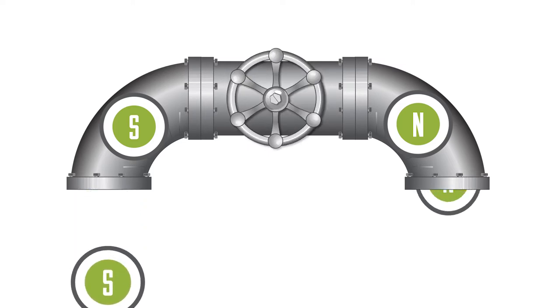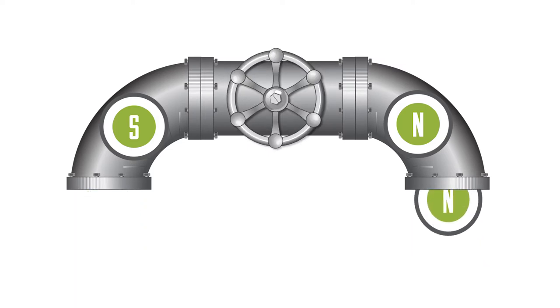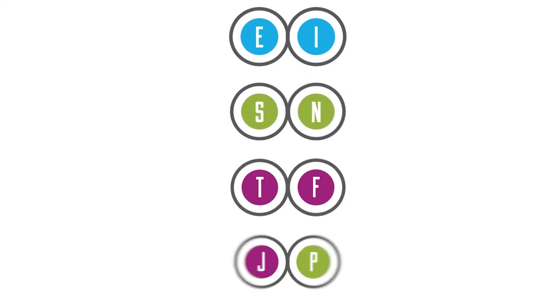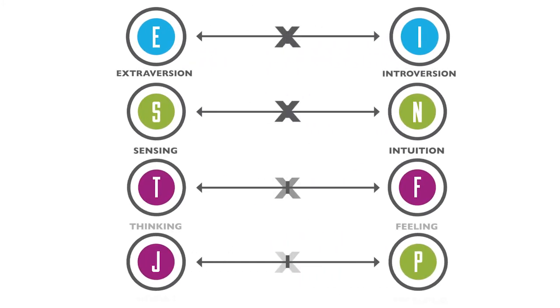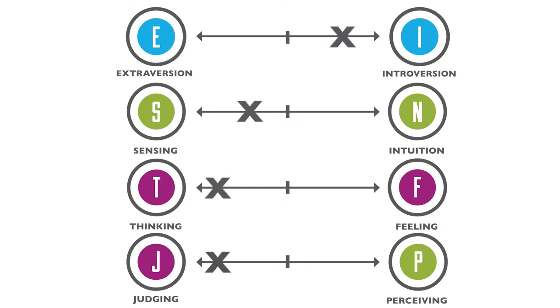You'll learn more about each of the four scales and you'll be asked to differentiate. You may prefer to think of yourself as down the middle, believing you're striking a balance, showing you use both. Yes, everyone uses both. The goal is to know which preference is more automatic, unconscious, and natural — like signing your name with your preferred hand — and which preference is more conscious and takes more time and energy, like writing with your non-preferred hand.